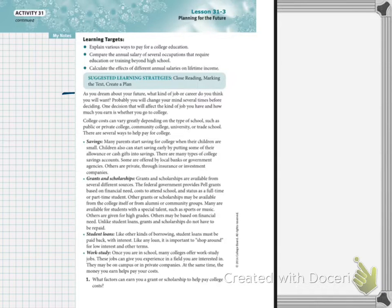Savings. Lots of parents will start a savings account for college when their children are small. Children can also start saving early, putting money away from their allowance or cash from gifts into their savings account. We talked about that on Monday. There are many types of college savings accounts. Some are offered by local banks or government agencies. Others are private through insurance or investment companies.